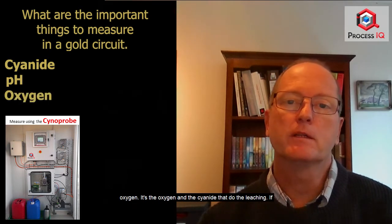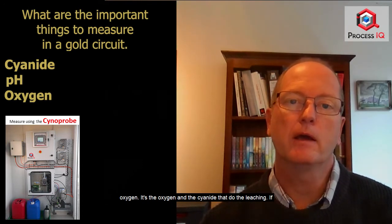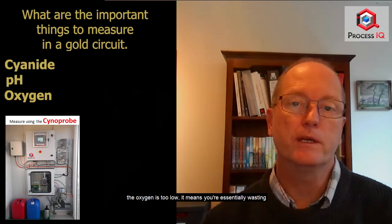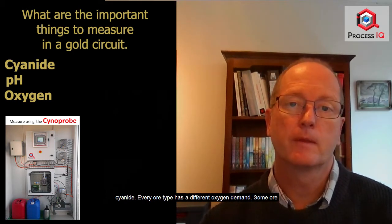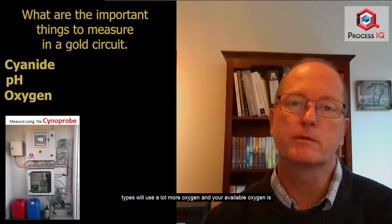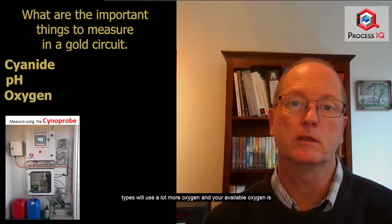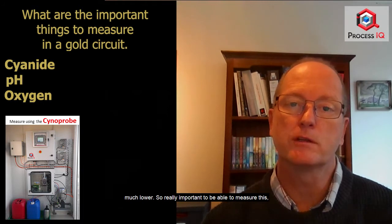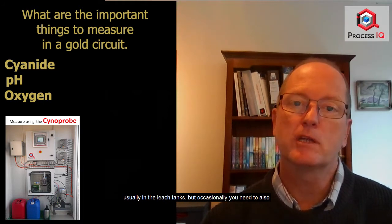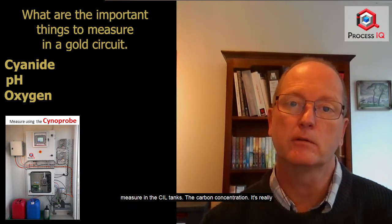The oxygen. It's the oxygen and the cyanide that do the leaching. If the oxygen is too low, it means you're essentially wasting cyanide. Every ore type has a different oxygen demand. Some ore types will use a lot more oxygen and your available oxygen is much lower. So it's really important to be able to measure this, usually in the leach tanks, but occasionally you need to also measure in the CIL tanks.